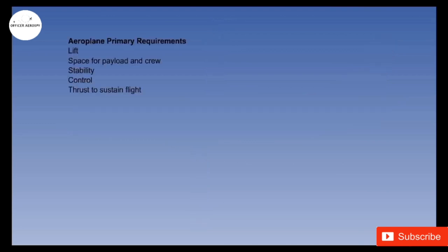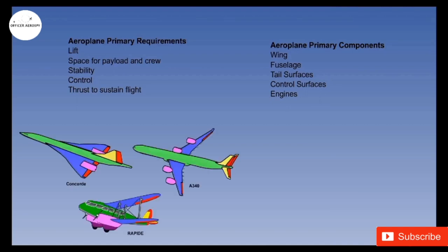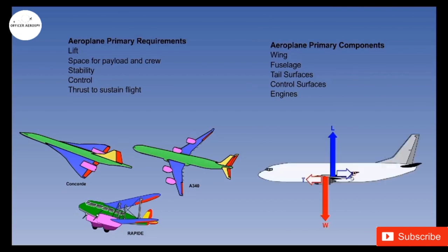To conclude, all powered airplanes have the same requirements, which are provided by the same primary components, but the design of these components varies between airplane types. Finally, we learnt the four forces acting on an airplane: lift, thrust, drag, and weight, and we learnt the relation between them. Lift, drag, and thrust will be greater for heavier airplanes and lesser for lighter airplanes.